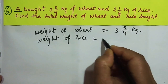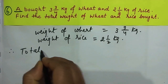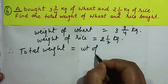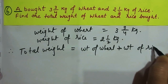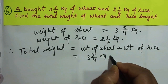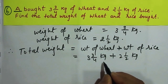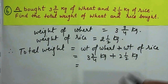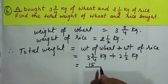Weight of rice is equal to 2 and 1/2 kg. Therefore, total weight will be equal to weight of wheat plus weight of rice, which is 3 and 3/4 kg plus 2 and 1/2 kg. Since both have the same units, you add them without the unit and put the unit at the end.